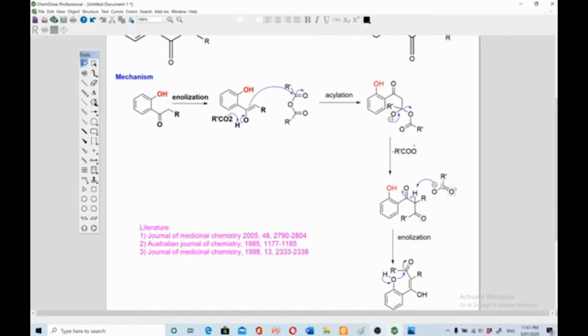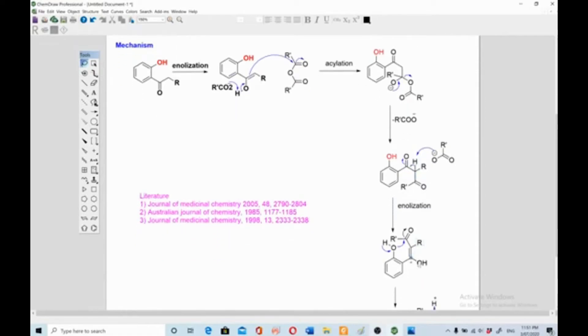This acyl group again picks proton from the alpha position making it enol again in a similar situation. This bond reverses back and this oxygen attacks on the carbonyl of ketone. This bond breaks in favor of oxygen and oxygen carries the negative charge. There's a bond formation between this carbon and this oxygen.